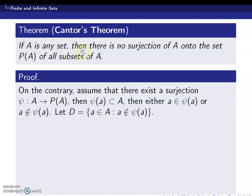If A is any set, then there is no surjection of A onto the set P(A) of all subsets of A. If A is any given set and P(A) is a collection of all subsets of A, then we cannot define a surjection from A onto P(A). This is equivalent to saying that A and P(A) cannot have the same number of elements, or A cannot in any case be equivalent to P(A).